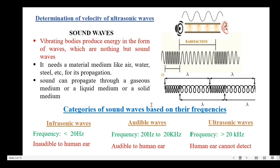Sound waves are longitudinal waves and they can travel with compressions and rarefactions. Compressions are known as high pressure regions and rarefactions as low pressure regions. The wavelength of the sound wave is defined as the distance between two successive compressions or the distance between two successive rarefactions.